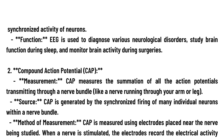Compound action potential (CAP) measurement: CAP measures the summation of all the action potentials transmitted through a nerve bundle, like a nerve running through your arm or leg. Source: CAP is generated by the synchronized firing of many individual neurons within a nerve bundle. Method of measurement: CAP is measured using electrodes placed near the nerve being studied; when a nerve is stimulated, the electrodes record the electrical activity.